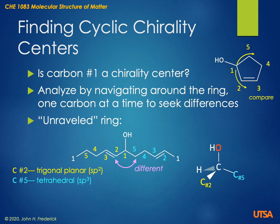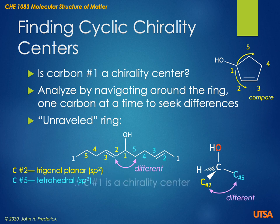What this means is that carbon number one is attached to a hydrogen, which is implied, it's attached to the OH which is shown, and it's attached to carbon number two — a trigonal planar carbon — and carbon number five, which is a tetrahedral carbon. Since those two are different, even though it seems like a subtle difference, this is indeed a chirality center.